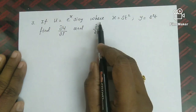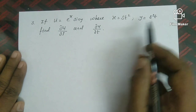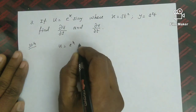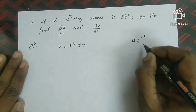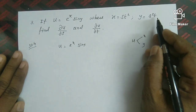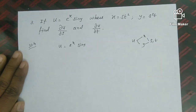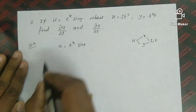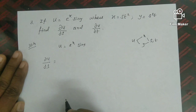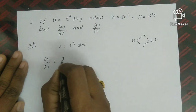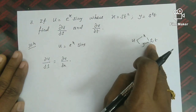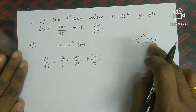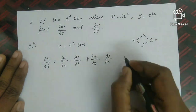Third problem: if u equals e to the power x sin y, where x equals s t squared and y equals s squared t, find partial u by partial s and partial u by partial t. Here u is a function of x and y, and x and y are functions of s and t — x and y are double variables. So we have partial x by partial s, partial x by partial t, partial y by partial s, and partial y by partial t. For partial u by partial s: partial u by partial s equals partial u by partial x into partial x by partial s plus partial u by partial y into partial y by partial s.